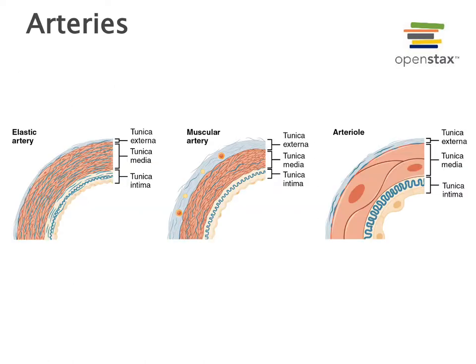There are three layers to the blood vessel wall in an artery or vein. The outermost layer, known as the tunica externa or tunica adventitia, consists primarily of fibrous connective tissue — lots of bundles of collagen fibers. This helps to provide structural support for the blood vessel wall and anchor the blood vessel to its surroundings.